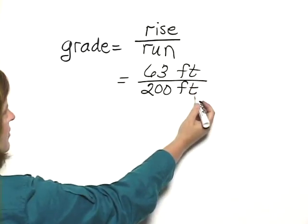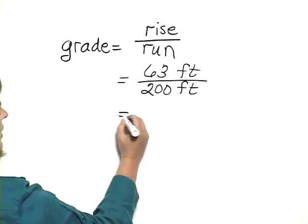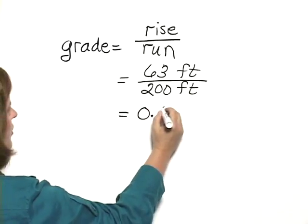The units will cancel, so we won't have a unit in our answer, and we divide 63 by 200, and we get 0.315.